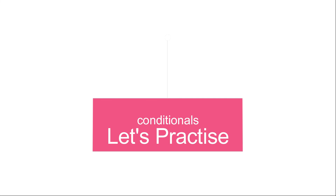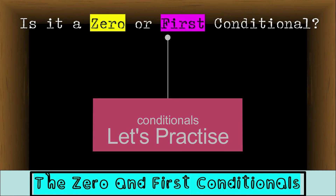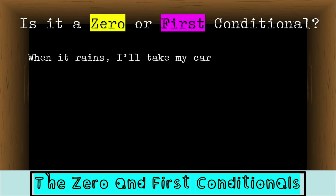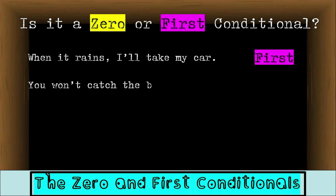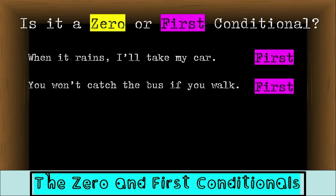Let's practice. Is it a zero or first conditional? 'When it rains, I'll take my car.' That's correct — this is the first conditional because it's possible. Next: 'You won't catch the bus if you walk.' Is this a fact, a habit, or is it possible? It's possible, so this is the first conditional.